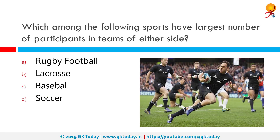Which among the following sports have the largest number of participants in teams on either side? The correct answer is Rugby Football. It has 15 members. Lacrosse has 12 members, Baseball has 9 members, and Soccer or Football has 11 members.